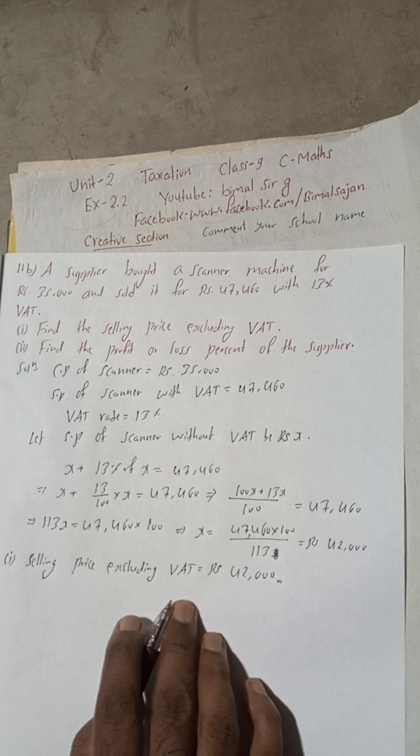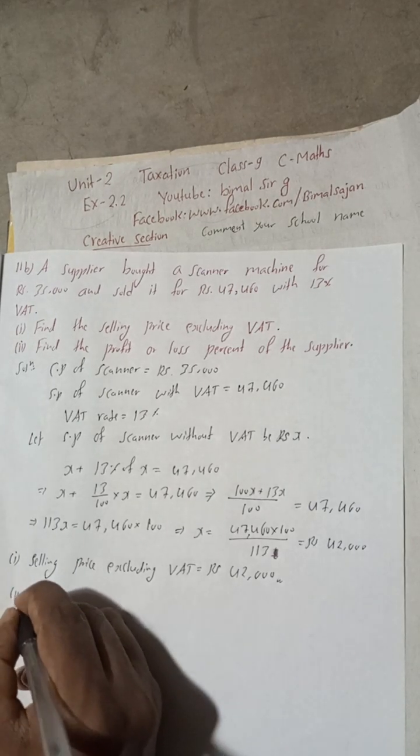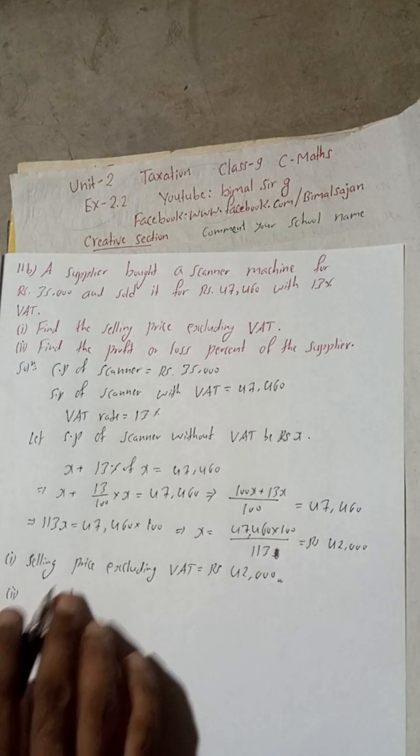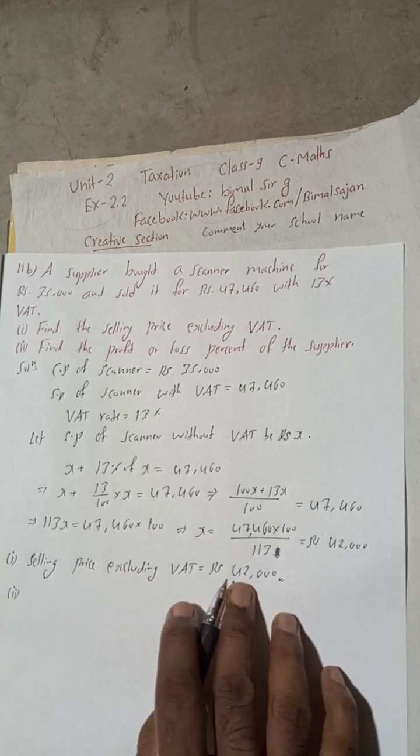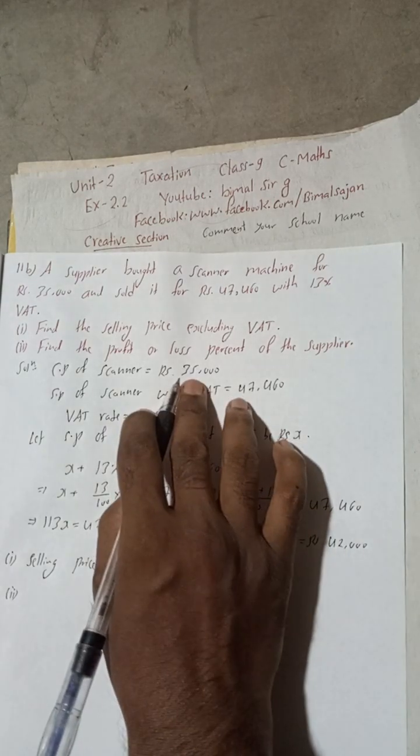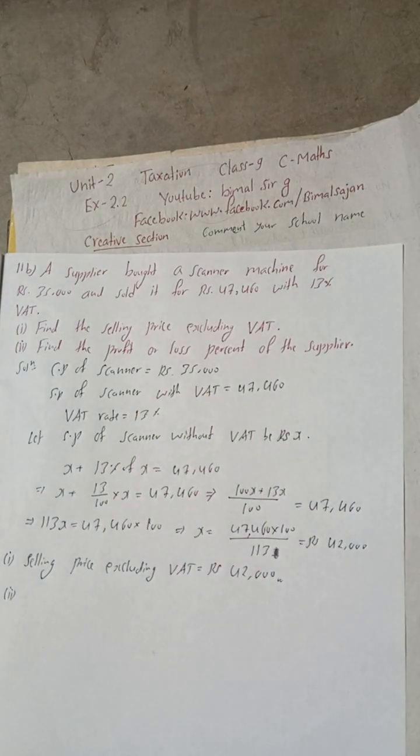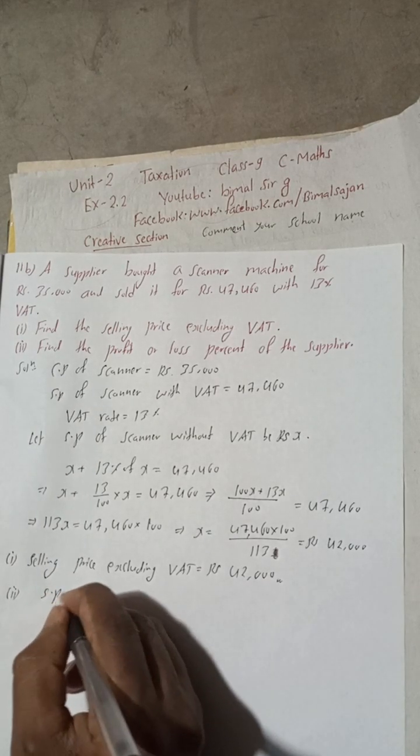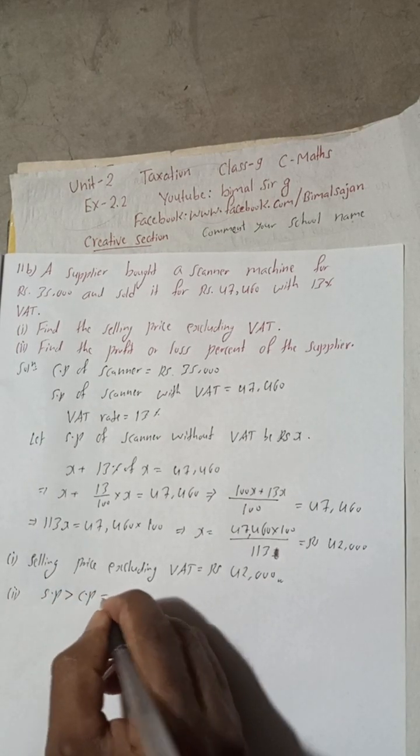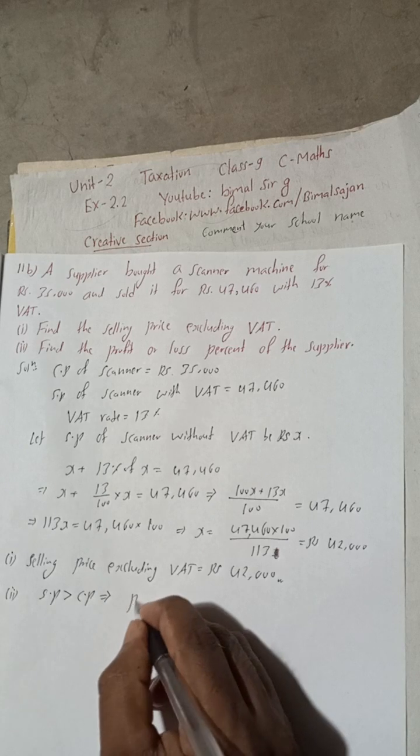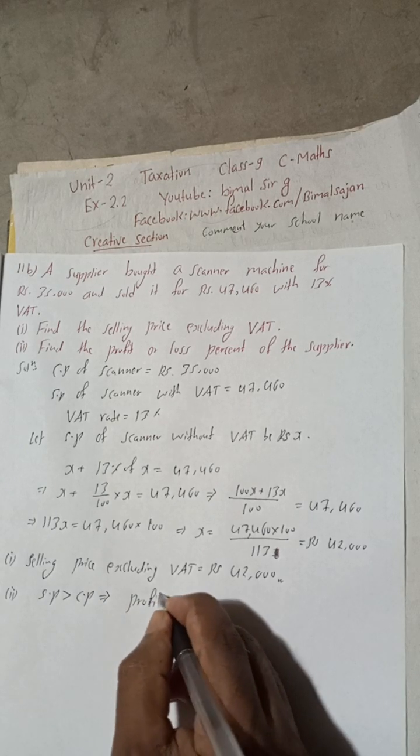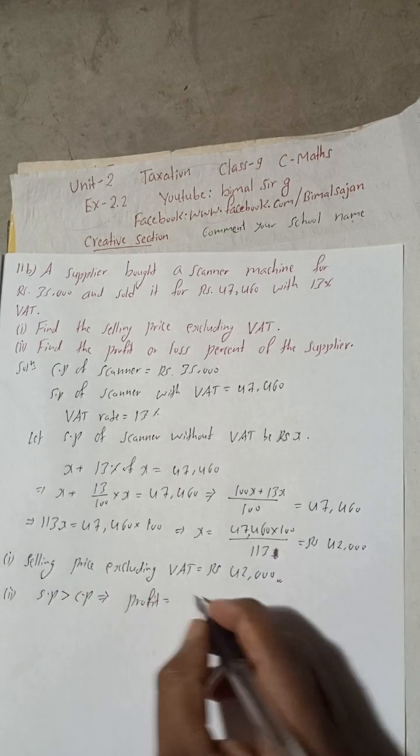Now find the profit or loss percent of the supplier. So if there is profit then find profit percent, if loss then loss percent. But now what we see, selling price without VAT is 42,000 and cost price was 35,000. So SP is greater than CP. This implies there is profit.